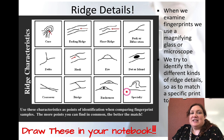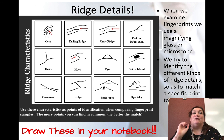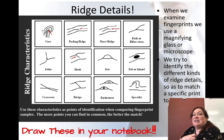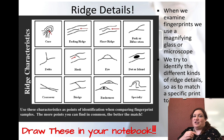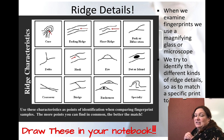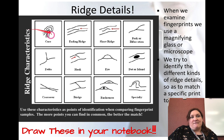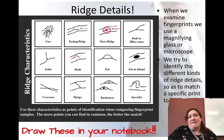Inside any print we have what are called ridge details. When we examine fingerprints we use a magnifying glass or a microscope and try to identify different kinds of ridge details to match a specific print to an exemplar. We're looking for things like cores — a little point right in the center. An ending ridge is a line that just stops. A short ridge has both the beginning and end in a very small space. A fork, or bifurcated ridge, looks like a forked river or branch splitting in two directions.